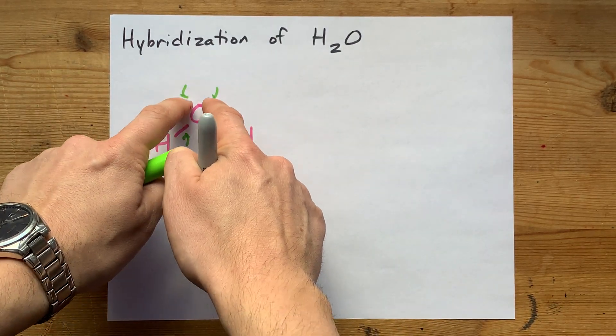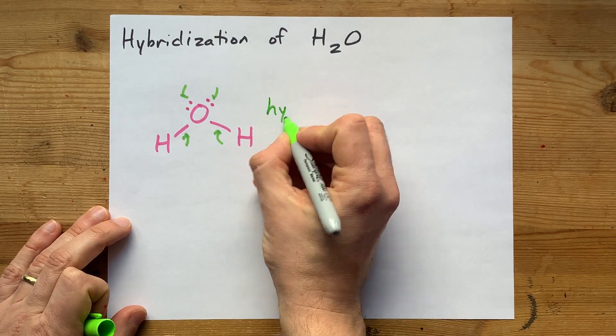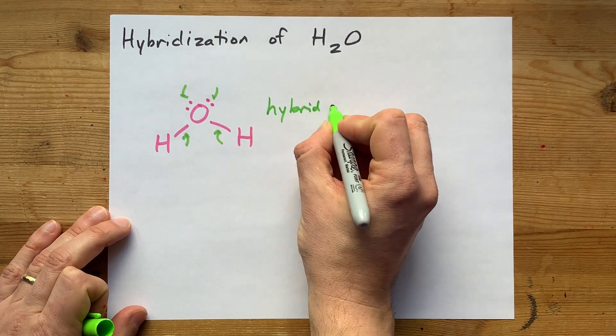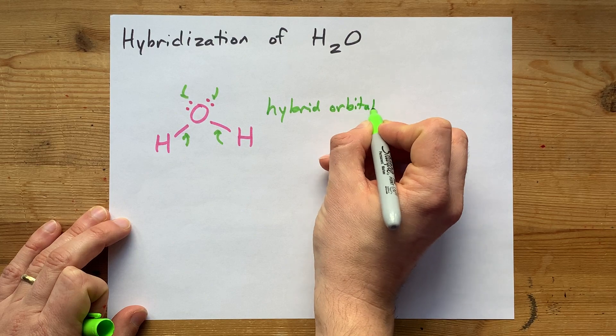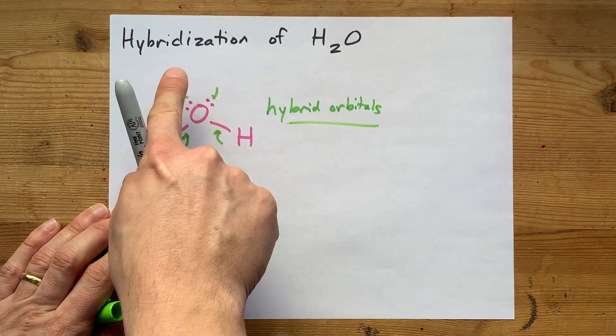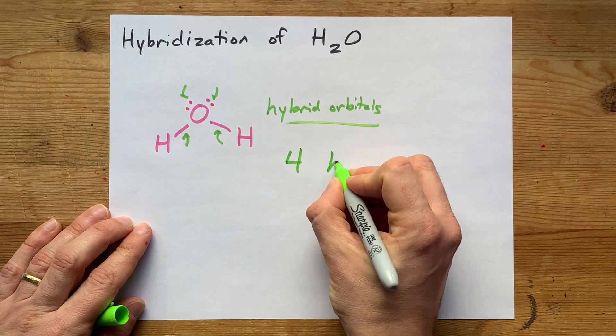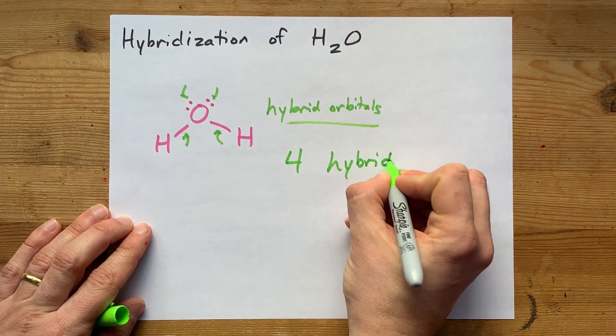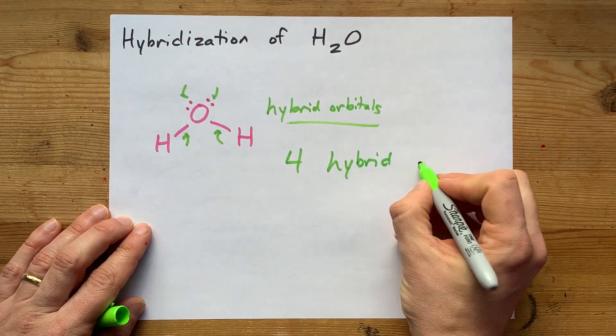Sigma bonds and lone pairs all go into hybrid orbitals. What that means is I need one, two, three, four hybridized orbitals to explain this structure.